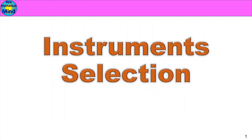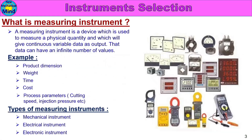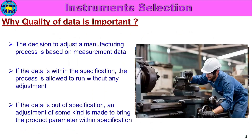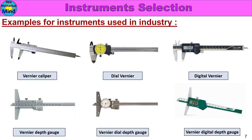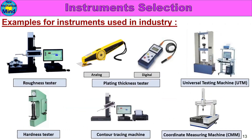In this video, we will see the instruments selection part 2. We will cover: what is measurement, what is measuring instrument, purpose of measurement, what is quality of data, why quality of data is important, and examples for instruments used in industry. This part is detailed and we will see the content.